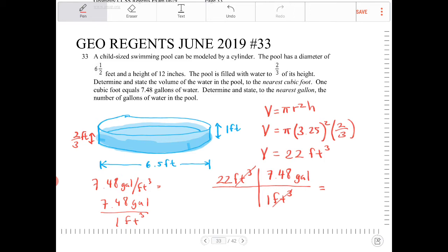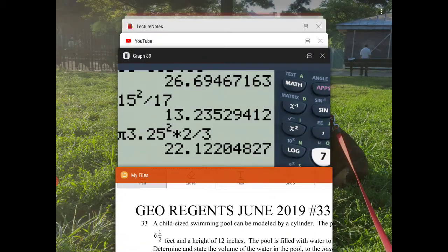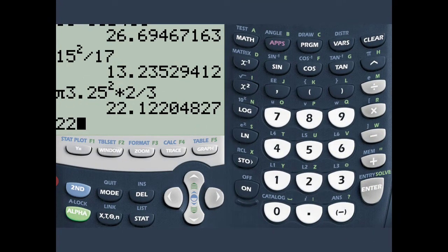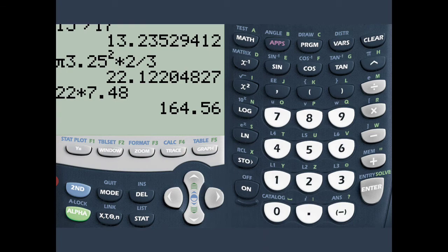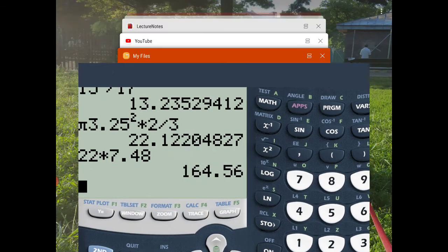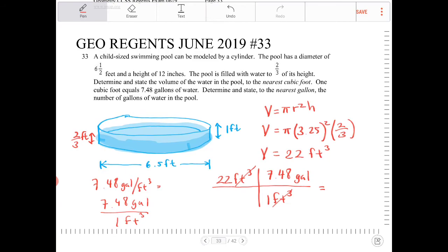So I'm going to take 22 and multiply by 7.48. That gives 164.56 gallons, which rounds to the nearest gallon as 165 gallons of water, even though it's a small kiddie pool.